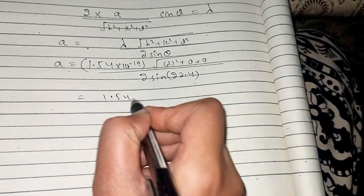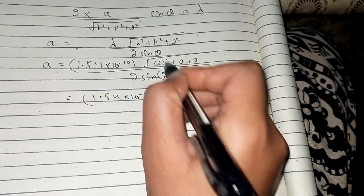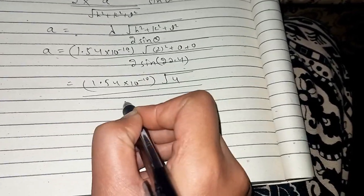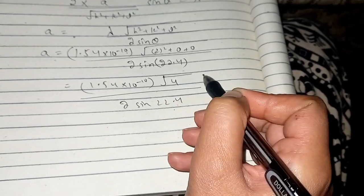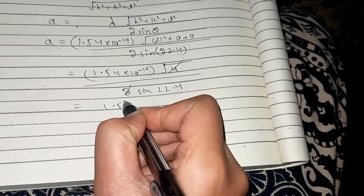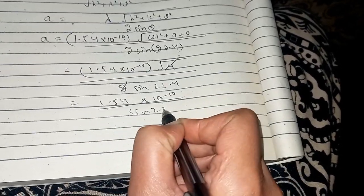So we have 1.54 × 10⁻¹⁰ multiplied by the square root of 4, which is 2, and they cancel out. So we simply have 1.54 × 10⁻¹⁰ divided by sin of 22.4 degrees.